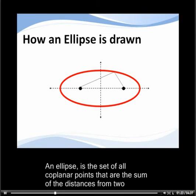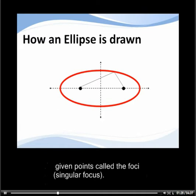An ellipse is the set of all planar points that are the sum of the distances from two given points called the foci (singular: focus).